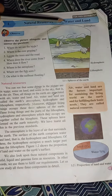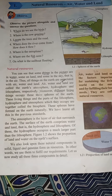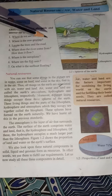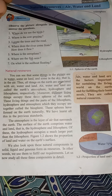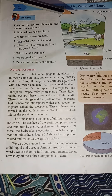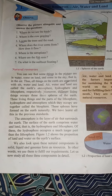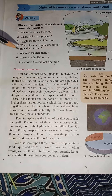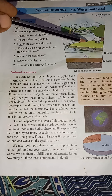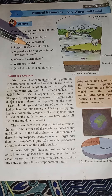Some questions are given here. Where do we see the bird? Sometimes we see the bird on the tree, or sometimes in the air or in the sky — they are flying. Where is the cow grazing? The cow is grazing on the land. Locate the trees and the roads.